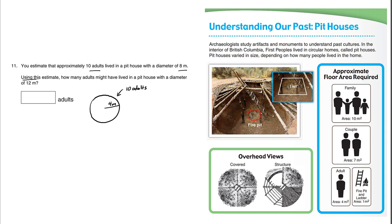Now we have to use this information, we can't use any other information, we have to use this fact here. How many adults might have lived in a pithouse with a diameter of 12 meters? So this second home is bigger. So this bigger home has a diameter of 12, when half of that is going to be the radius, it's going to be 6 meters.